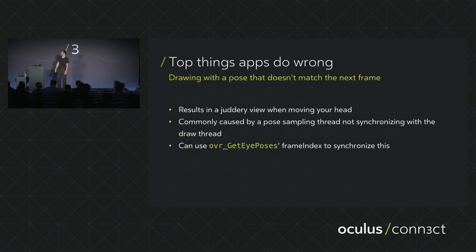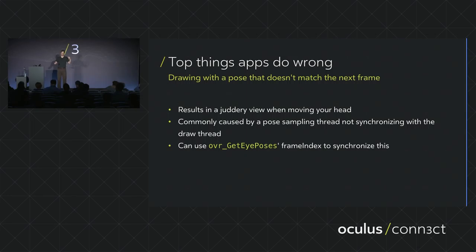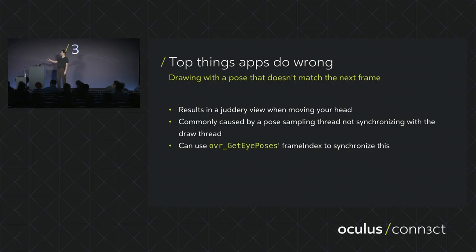Problem two: drawing with a pose that doesn't match the next frame. Typically you call OVR get tracking state and draw a frame matching the result. However, some engines sample tracking state multiple times per frame in the background and draw using the wrong sample — one that's already passed where they're supposed to be drawing — causing the view to shake. Use OVR get eye poses frame index to synchronize this correctly. Documentation on our developer site covers this as well.